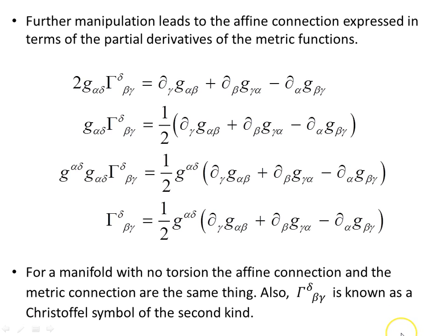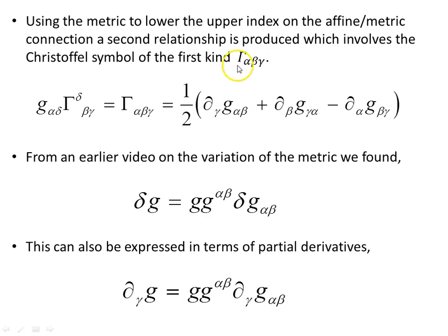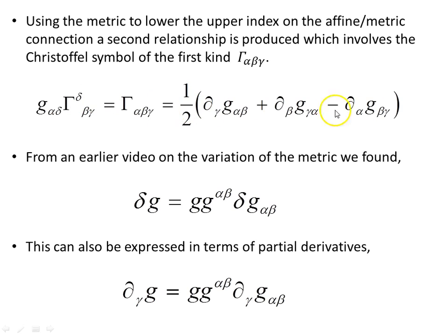For a manifold with no torsion, the affine connection and the metric connection are the same thing. The gamma with delta-beta-gamma is known as the Christoffel symbol of the second kind — one index raised makes it the Christoffel symbol of the second kind. We can use the metric to lower the upper index on the affine metric connection, and that gives us the Christoffel symbol of the first kind, where all three indices are in the covariant lower position. That is our second relationship.